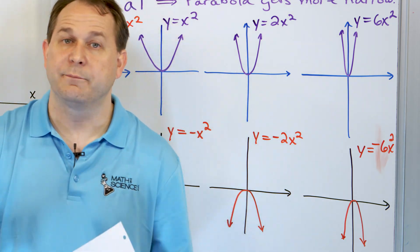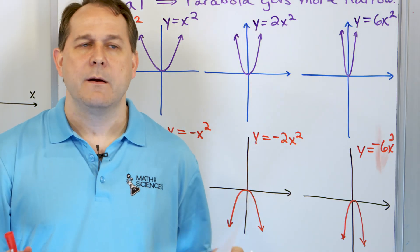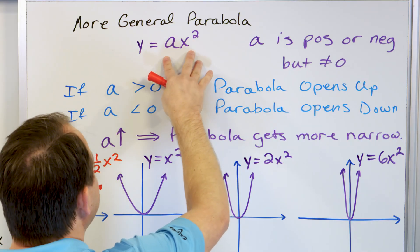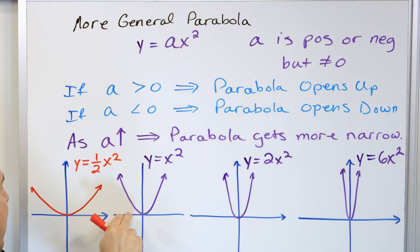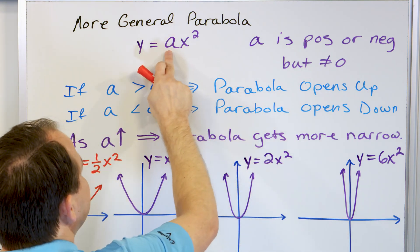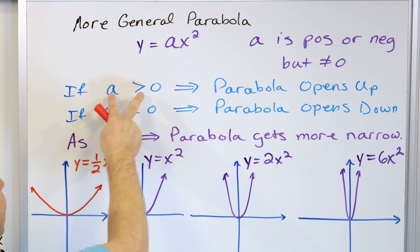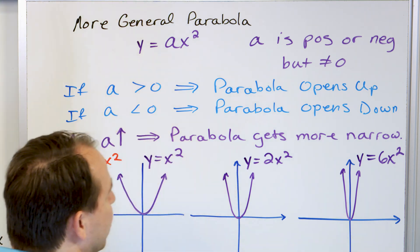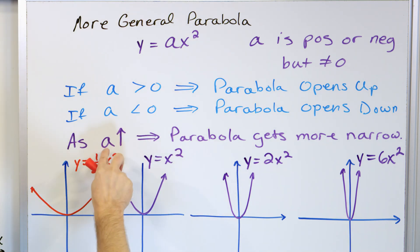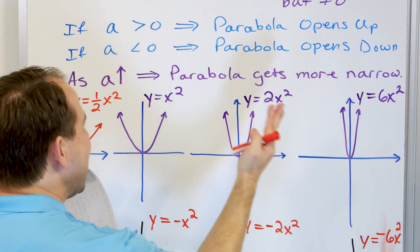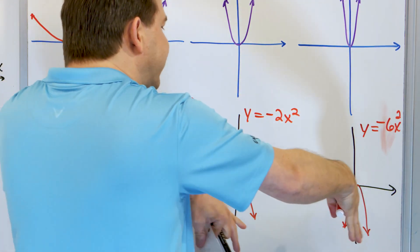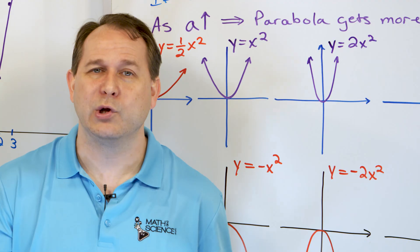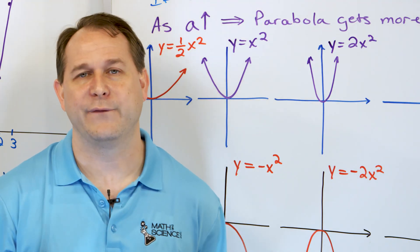There shouldn't be any confusion at this point. Parabolas in general are a times x squared. They're still centered at the origin, but the coefficient in front changes how the thing looks. If it's a positive value, it always opens upward. If it's a negative value, it always opens downward. And as the size of a gets larger and larger, the parabola gets more narrow — even if it's negative. Now follow me over to the computer for a graphical interactive demonstration.